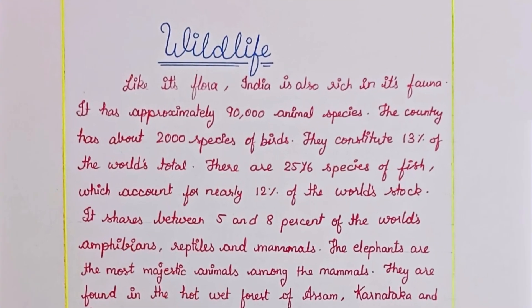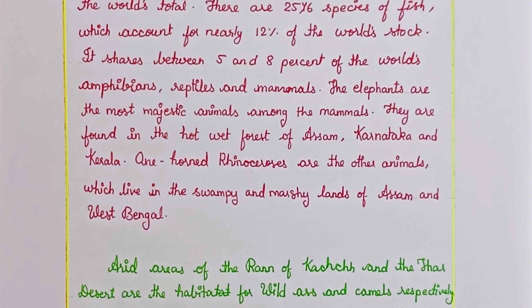Wildlife: Like its flora, India is also rich in its fauna. It has approximately 90,000 animal species. The country has about 2,000 species of birds, constituting 13% of the world's total. There are 2,516 species of fish, which account for nearly 12% of the world's stock. India shares between 5 and 8% of the world's amphibians, reptiles, and mammals. The elephants are the most majestic animals among the mammals, found in the hot, wet forests of Assam, Karnataka, and Kerala. One-horned rhinoceroses live in the swampy and marshy lands of Assam and West Bengal.